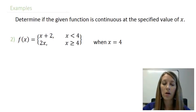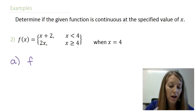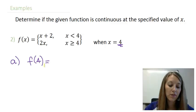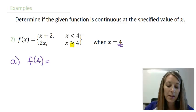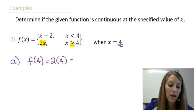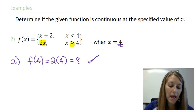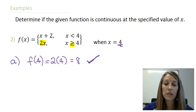Pause the video and try this one on your own. If you don't know where to start, begin with property a: find f(4). In piecewise functions, we look for the piece with the 'or equal to' symbol. That's the second piece, 2x. Plugging in: 2 times 4 = 8. No problems there, so property a holds and so far we believe the function is continuous.